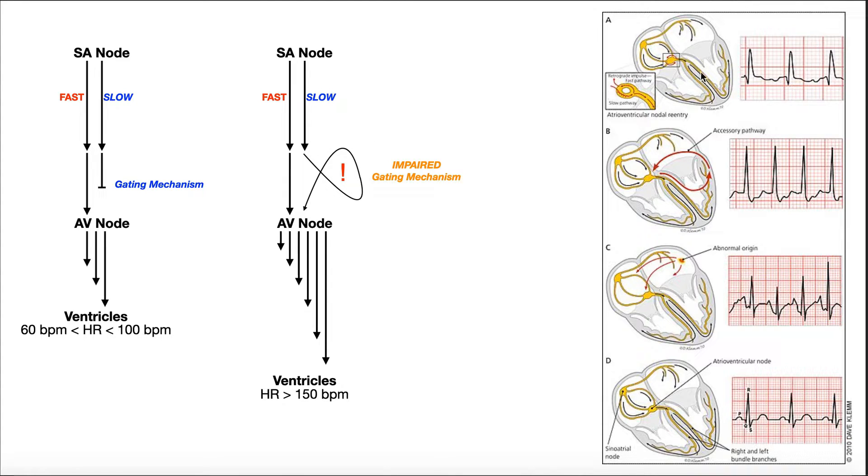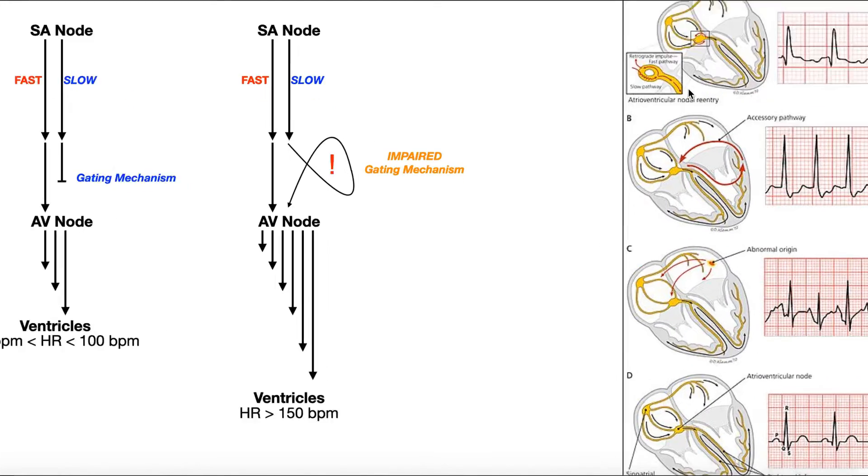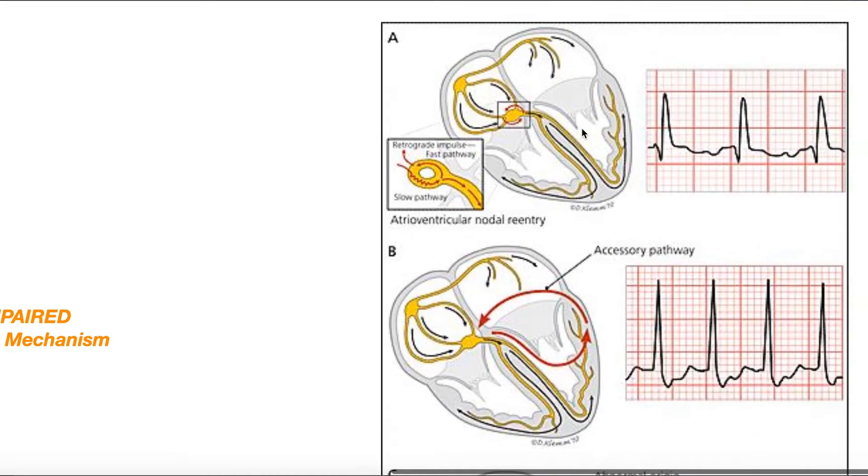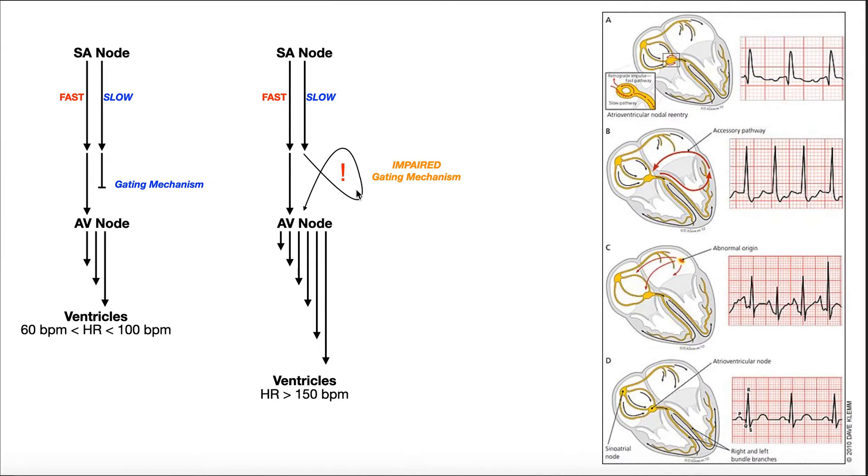In fact, this one is actually shown right here at the top in A. This is where you've got a fast pathway that's normal, and then a slow pathway that normally should be dissipated, but it instead loops around and allows more impulses to go through the AV node to the ventricles. That's just one mechanism, though.